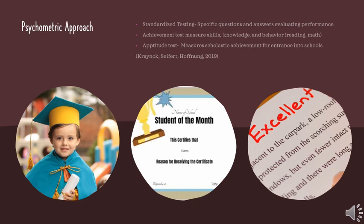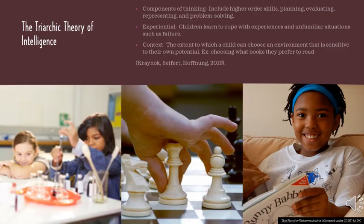Acquiring skills in mathematics, reading, and writing is rooted in building competence in thinking, planning, and evaluating for the future. The triarchic theory of intelligence suggests that children will eventually have to learn how to effectively engage and respond to new experiences and problems. At this stage, they learn about failure and different ways to cope in certain situations.